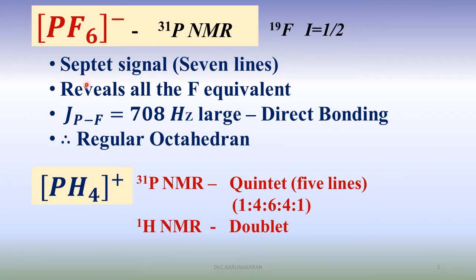What is the structure of PF6 minus? It is elucidated using phosphorus-31 NMR. It gives a septet signal, 7 lines. Phosphorus NMR reveals that there are 6 fluorine atoms. Phosphorus couples with the 6 fluorine atoms to give a septet signal, 7 lines. It reveals that all the fluorine are equivalent. Therefore, the geometry is regular octahedral.